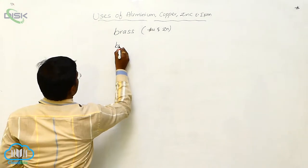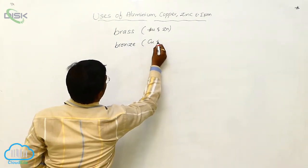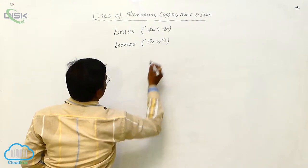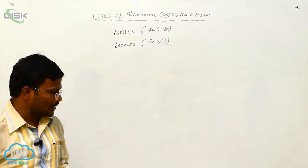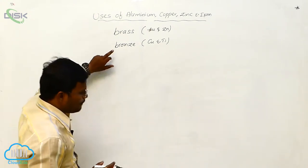Similarly, Bronze. One more alloy which is available, Copper and Tin. So, we are going to mix Copper and Tin together, which yields us the formation of Bronze.